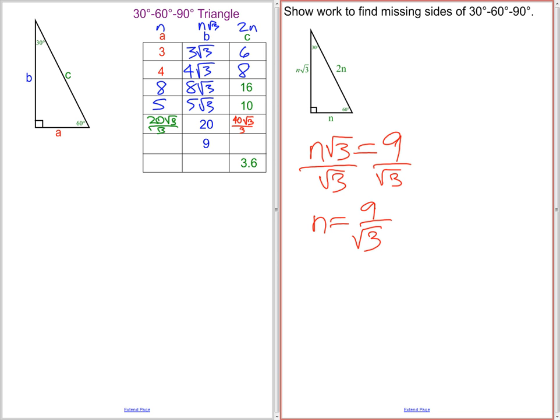Now we have n equals 9 over the square root of 3. We need to rationalize this, which means we multiply it by the square root of 3 over the square root of 3, which gives us 9 root 3 over 3.